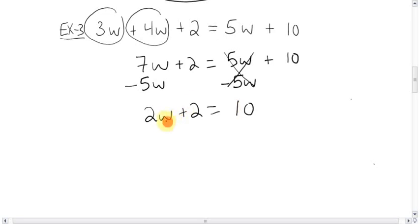And now, good old SAMDEP. That 2. Get rid of the adding subtracting one first. Minus 2 from this side. Minus 2 from that side. That makes the 2s go away. You're left with 2w. 10 minus 2, which is 8. And now, the 2 is multiplying the w. The opposite is dividing. Same to the other side. The 2s are gone. W equals 4.